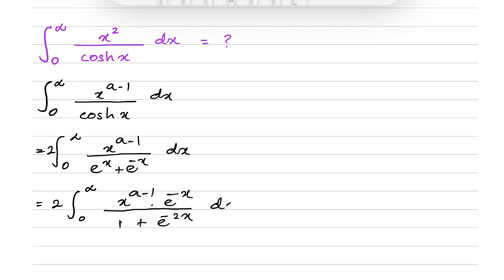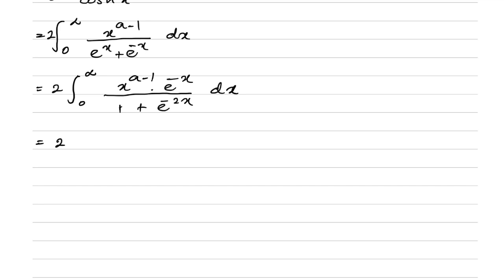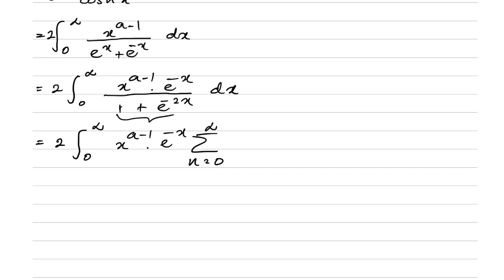So we have 2 times the integral from 0 to infinity of x^(a-1) times e^(-x) divided by (1 + e^(-2x)) dx. Now, 1 over (1 + e^(-2x)) can be represented as an infinite series: the sum from n=0 to infinity of (-e^(-2x))^n.